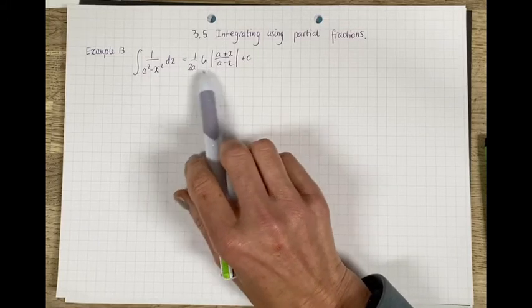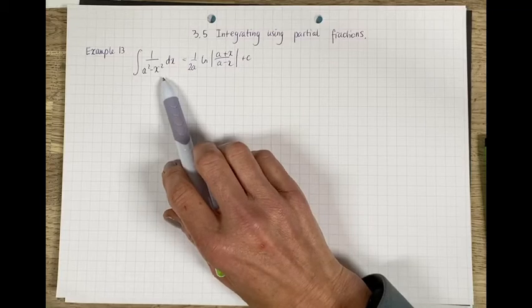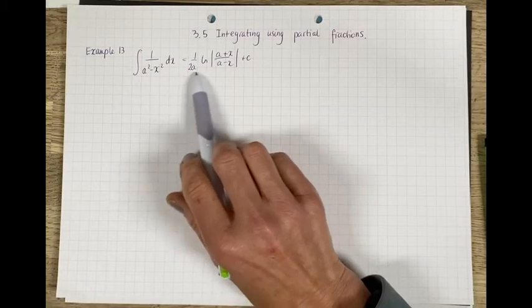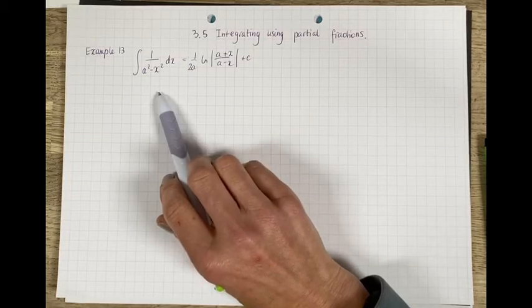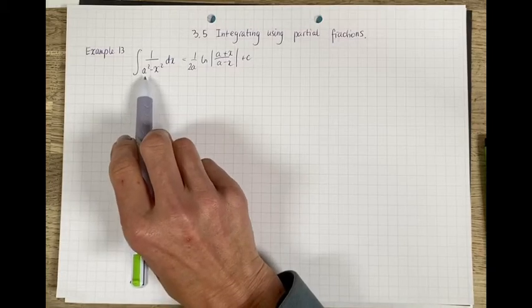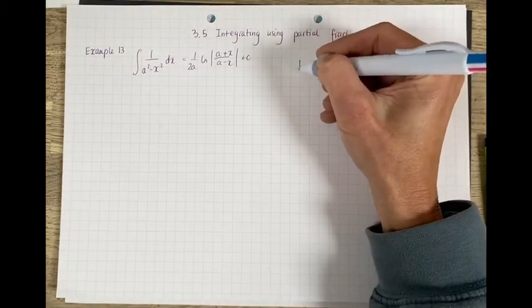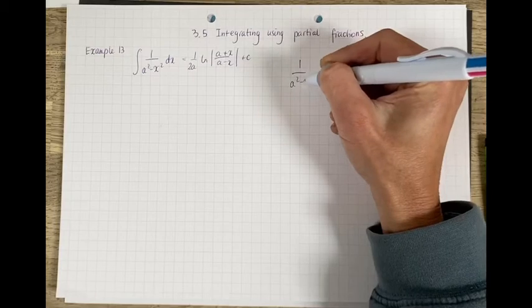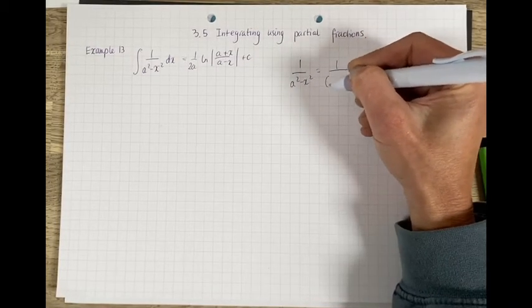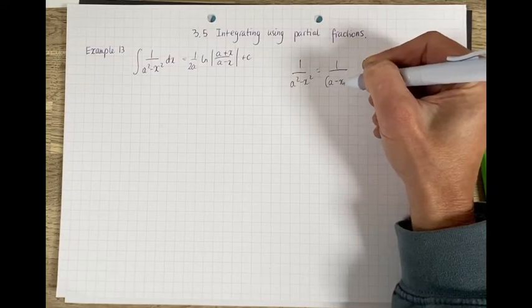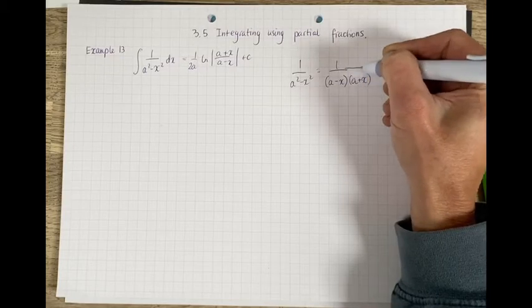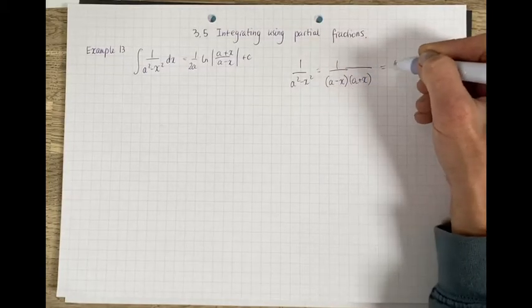This is the result that you can use directly as soon as you see an expression like this. We are going to prove that the following result is true. First of all, you can notice that we can split 1 over a squared minus x squared into partial fractions. Factorize the denominator to begin with, and then write it as A over (a minus x) plus B over (a plus x).